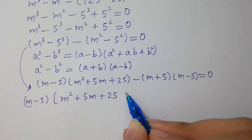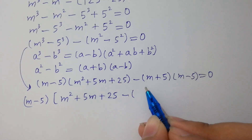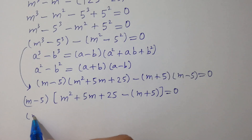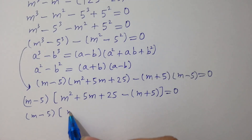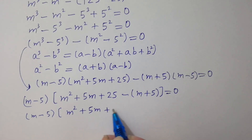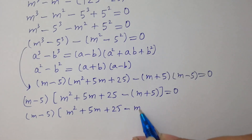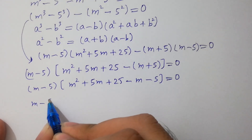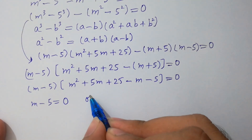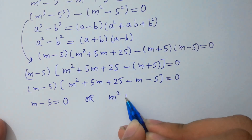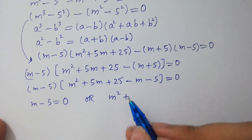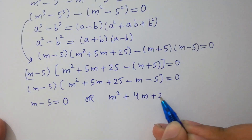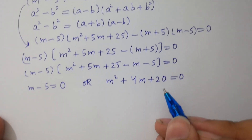We get (M minus 5)[(M squared plus 5M + 25) minus (M plus 5)] equals zero, which simplifies to (M minus 5)(M squared plus 4M + 20) equals zero. So M minus 5 equals 0, or M squared plus 4M plus 20 equals zero — a quadratic equation.